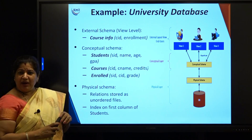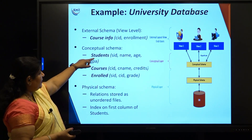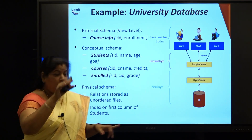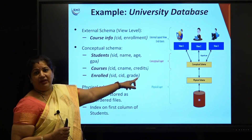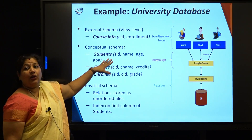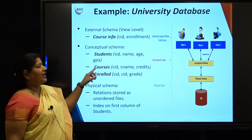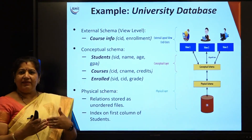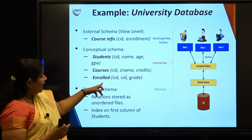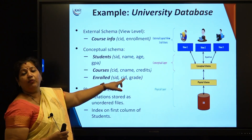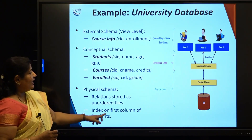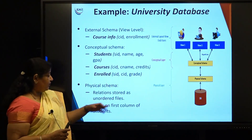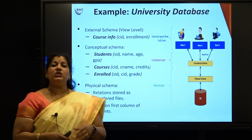Coming to the conceptual schema, this talks about the logical structure. There may be three tables: Students, Courses, and Enrollment. Enrollment talks about the students who have joined a course and what CGPA they have earned. Student details are stored in the Students table, course details in the Courses table, and Enrollment records which student has taken which course and what grade they earned. Finally, at the physical schema level, the relation is stored as an unordered file or maybe an indexed file — it talks about the storage structure.